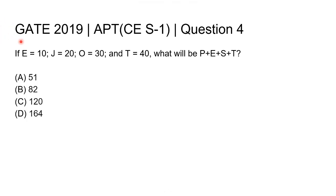Hello everyone, this question is from GATE 2019 Civil Engineering Site 1, question number 4. If E equals 10, J equals 20, O equals 30, and T equals 40, what will be P plus E plus S plus T?